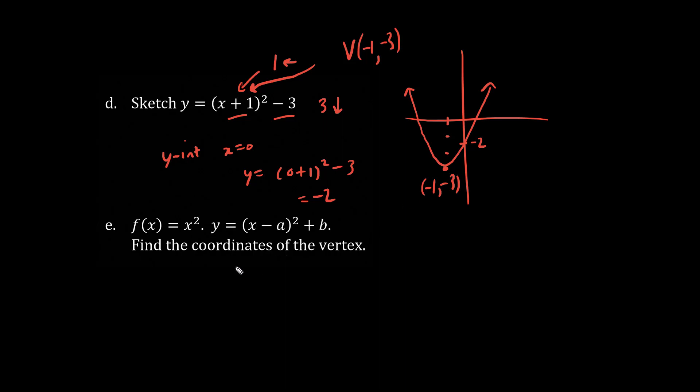So for this question here, we're asked to find the coordinates of the vertex when dealing with general variables, a and b. The vertex here is the opposite of this value, which is a. Negative a became a, positive a. Comma, the same value as this, which is b. So the vertex is (a, b).